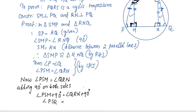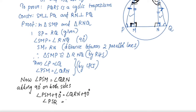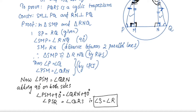Angle PSR — this angle is QRS, that is angle QRS. So PSR is equal to QRS. Angle S is equal to angle R. Angle P is equal to angle Q.